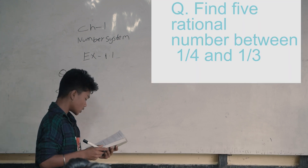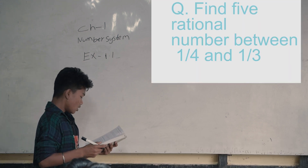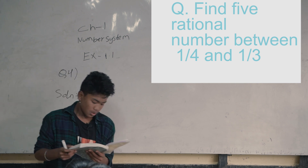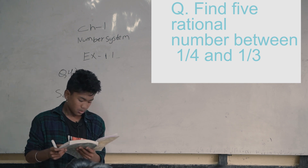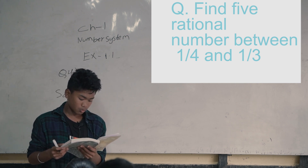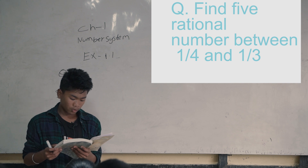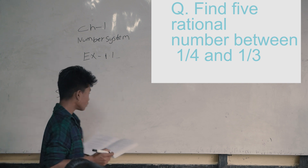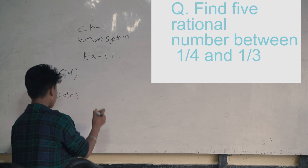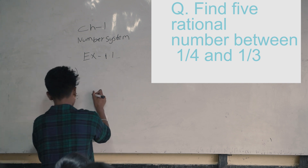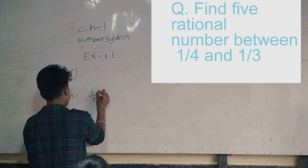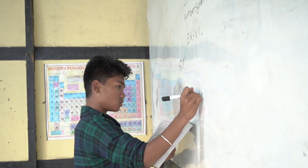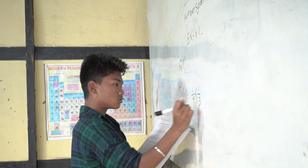Exercise 1.1, question number four: find five rational numbers between one by four and one by three.